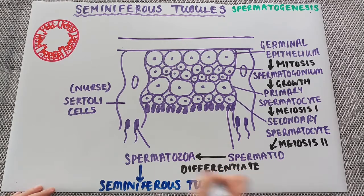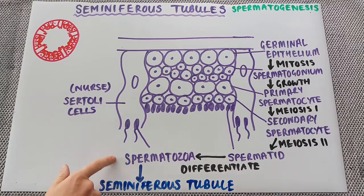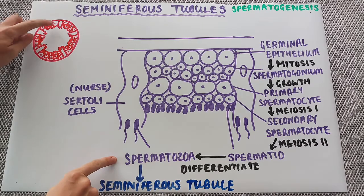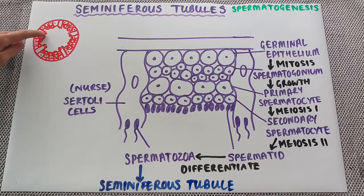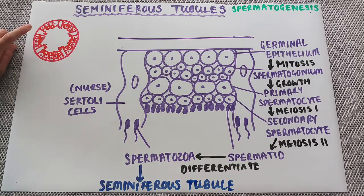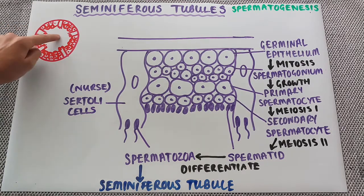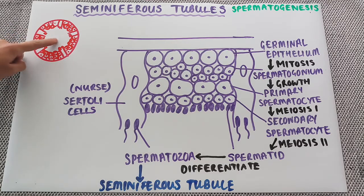Going back to the picture at the top left, the spermatozoa are being made at the bottom of the long Sertoli cells. As soon as the spermatozoa have fully differentiated, they are released into the centre of the seminiferous tubules and can then be carried out of the testes.